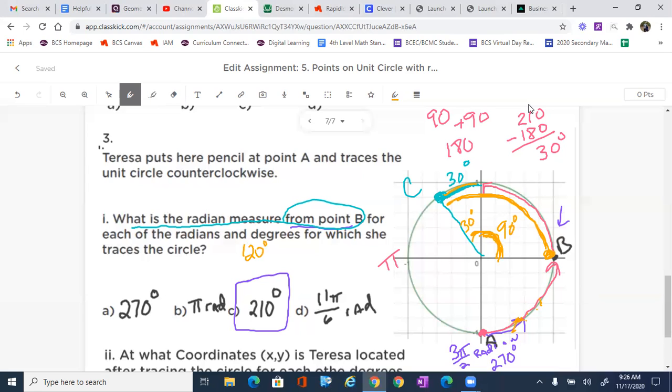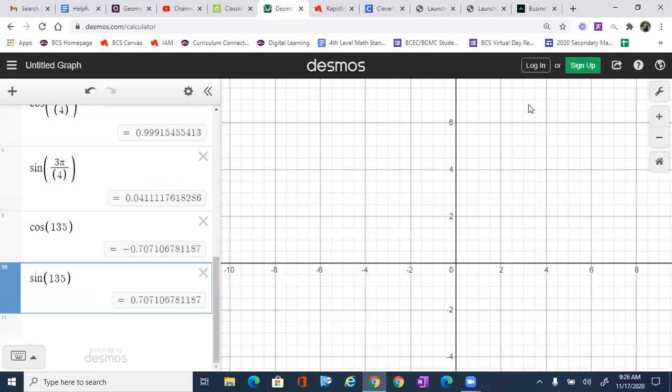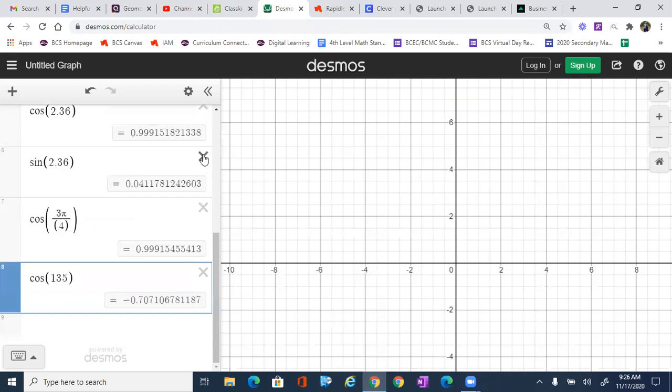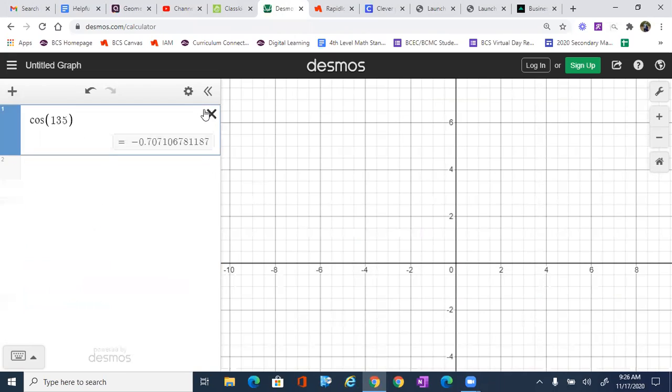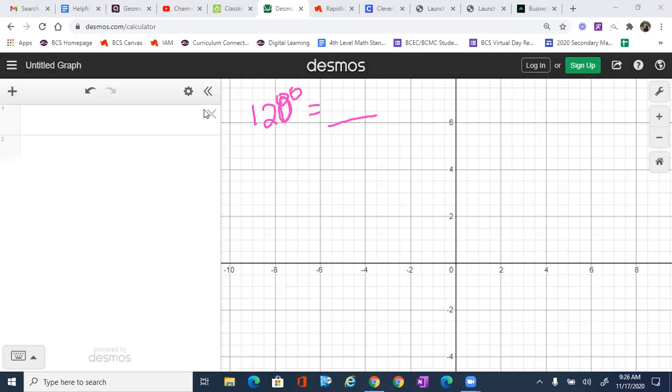Now, there's a couple ways we can do that. So we know that when we're dealing with these problems, we want to transfer 120 degrees over to radians. So 120 degrees equals how many radians. Now, we have some choices. It depends on what we're looking for. We can do an approximation.